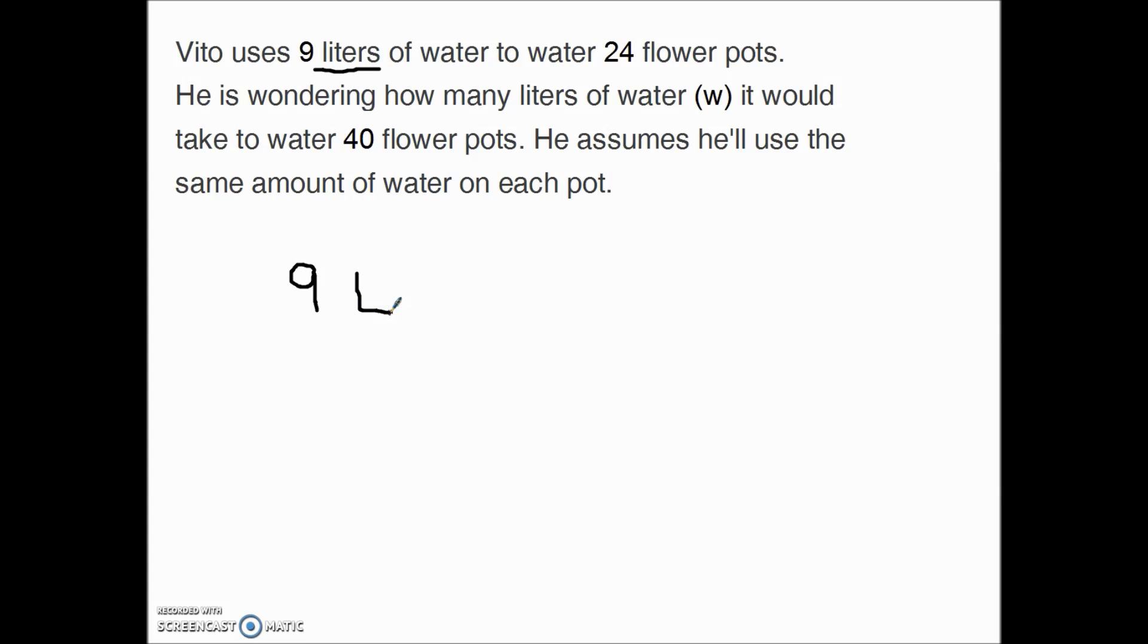So Vito uses 9 liters of water to every 24 flower pots. So that's the ratio. So I'm going to automatically put the 24 underneath here and I'm going to put an F for flower pots.